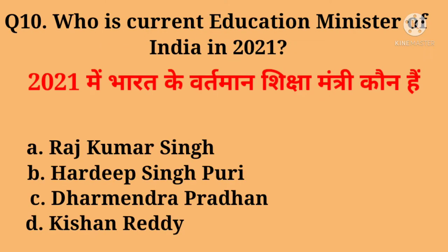Question number nine: Who is the current Education Minister of India in 2021? Right answer is Dharmendra Pradhan.